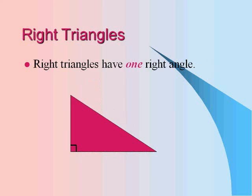Right triangles have one right angle, which will normally be marked or designated by the right perpendicular angle symbol.